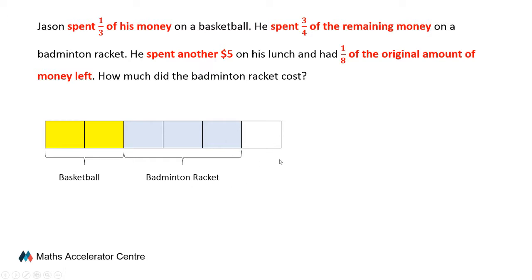Let's focus on this last unit. For this last unit, he spent $5 on his lunch and had one-eighth of the original amount of money left. So $5 for lunch and the remainder is one-eighth of the original sum of money. Now let's analyze the model. After we subdivide the remainder into four smaller units and look at the entire whole, we have six small units.